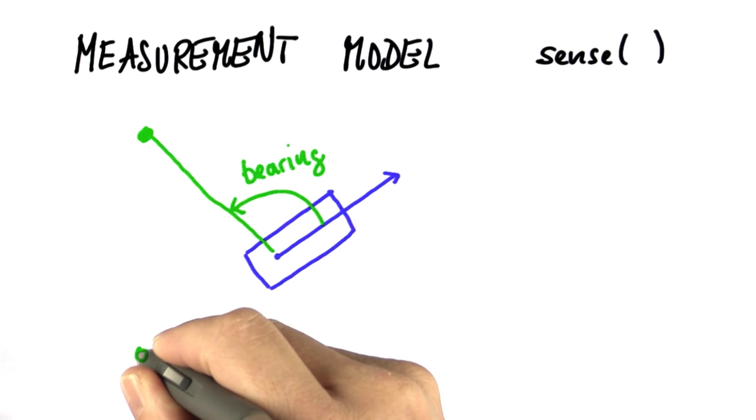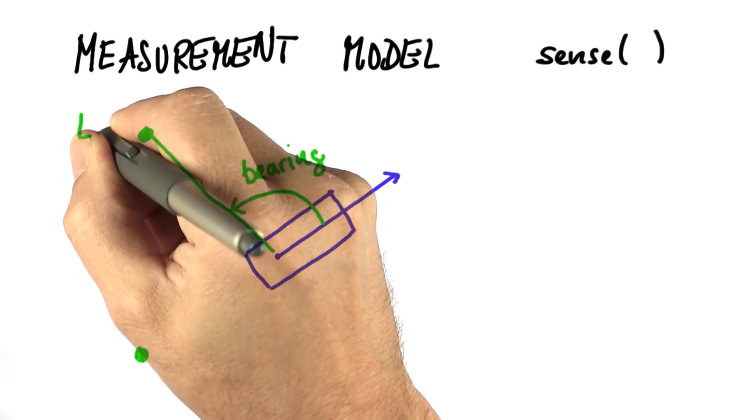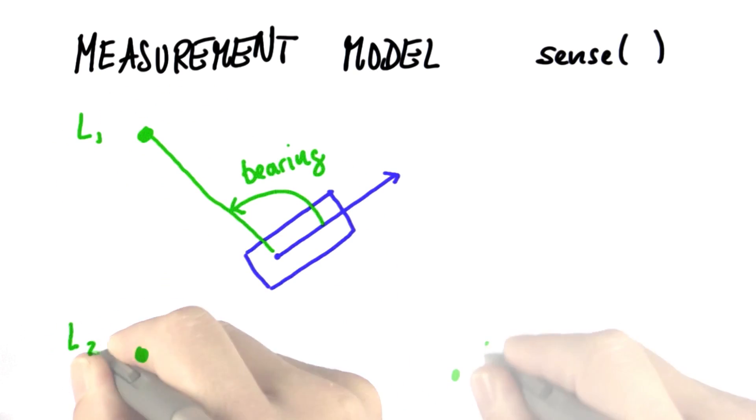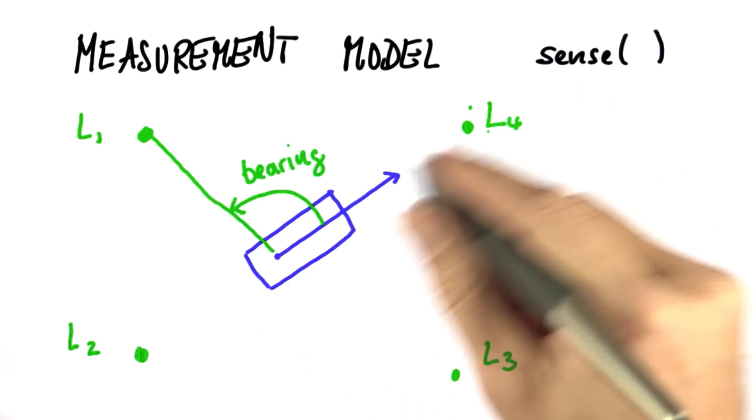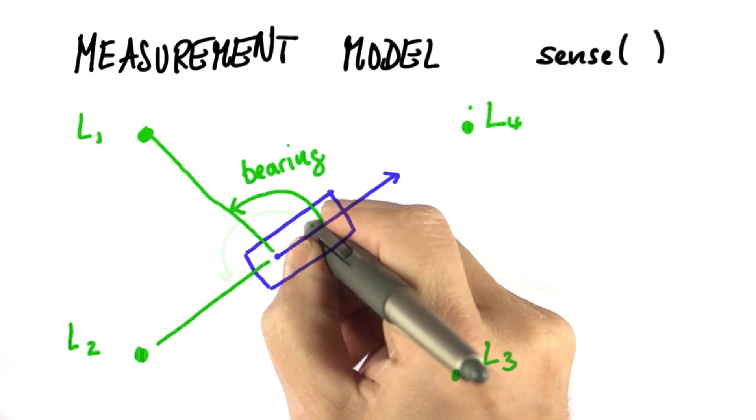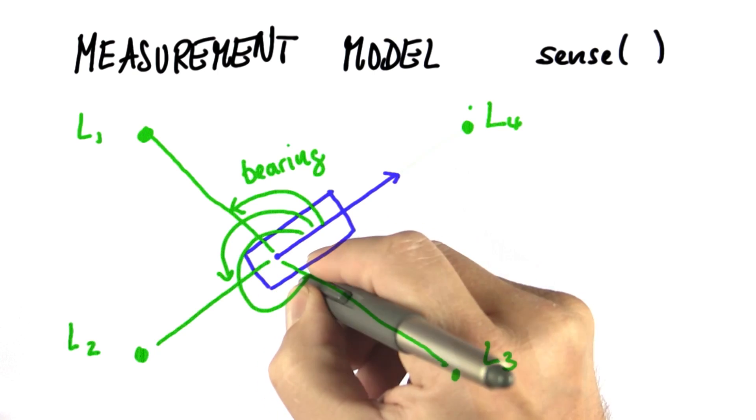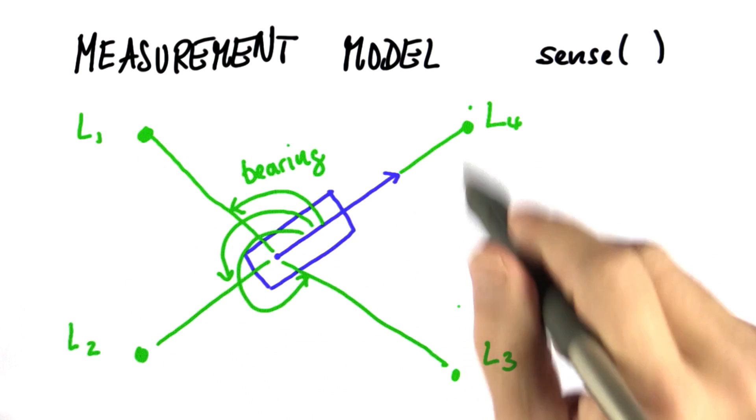We assume in the world there are four landmarks, L1, L2, L3, and L4. All of those are distinguishable. So the measurement vector is a set of four bearings that correspond to those four different landmarks.